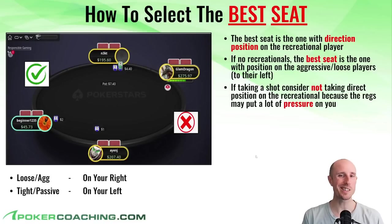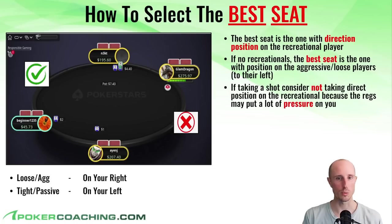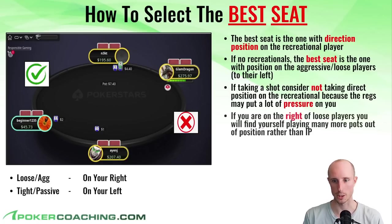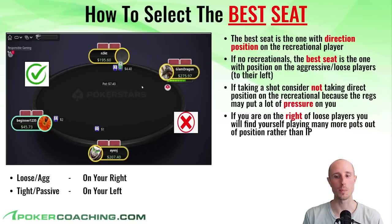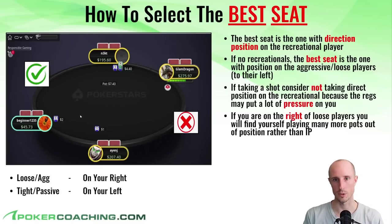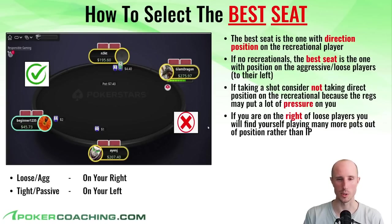If you're taking a shot, you might consider not taking direct position on the recreational, because the regs may put a lot of pressure on you — three-betting, squeezing, cold four-betting — because they know you're taking a shot and going to be out of your comfort zone. So they're going to put you to the test when they think you're trying to isolate the recreational with a wider range. In that case, you may actually want to take the seat to the left of the regs and let them have the Jesus seat, so you'll find yourself playing more pots in position versus the regs rather than out of position versus them.